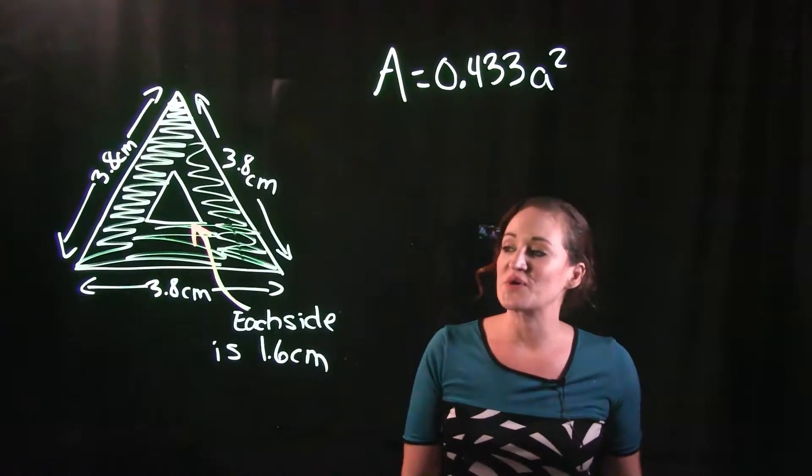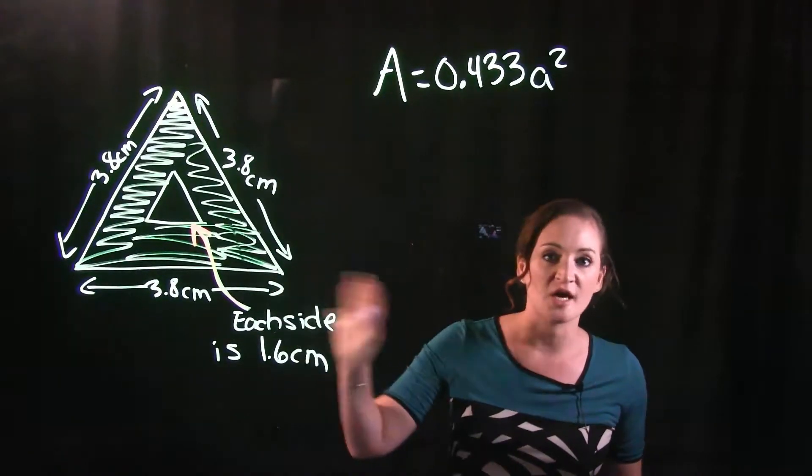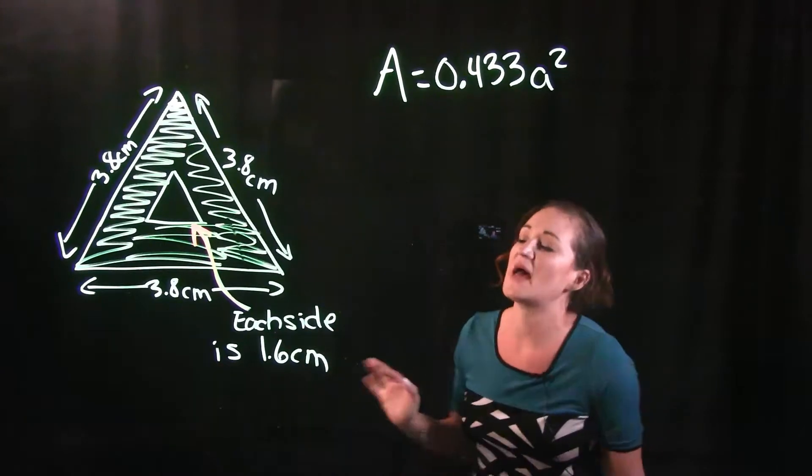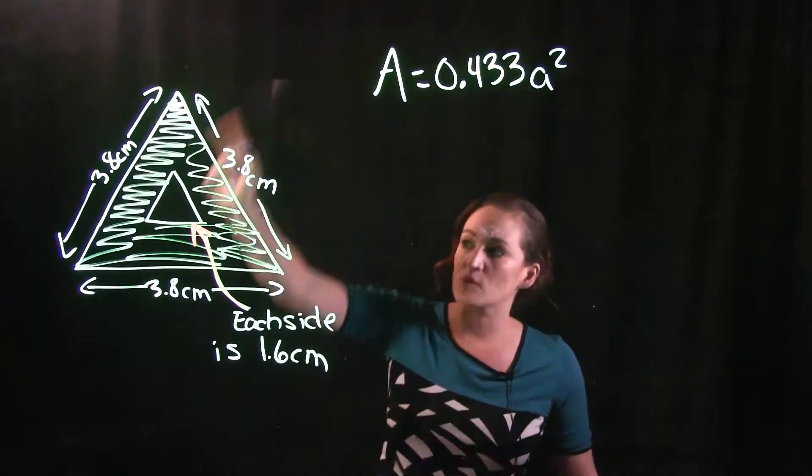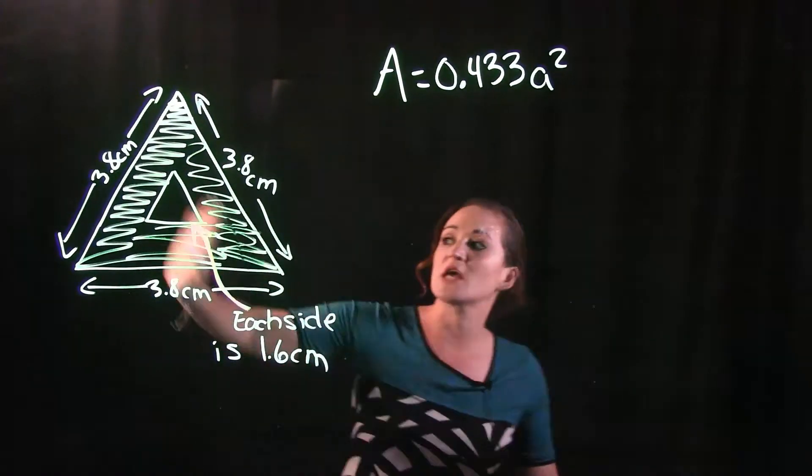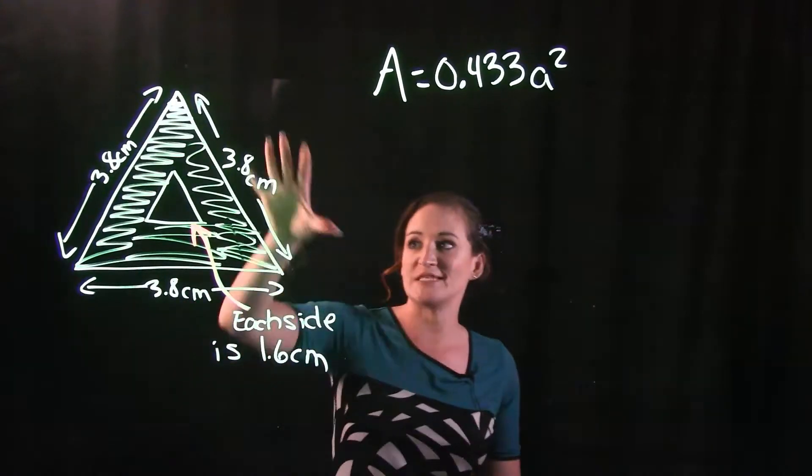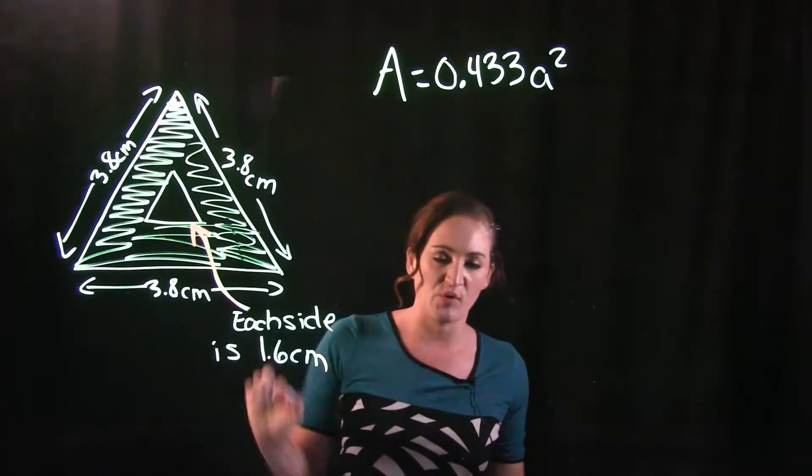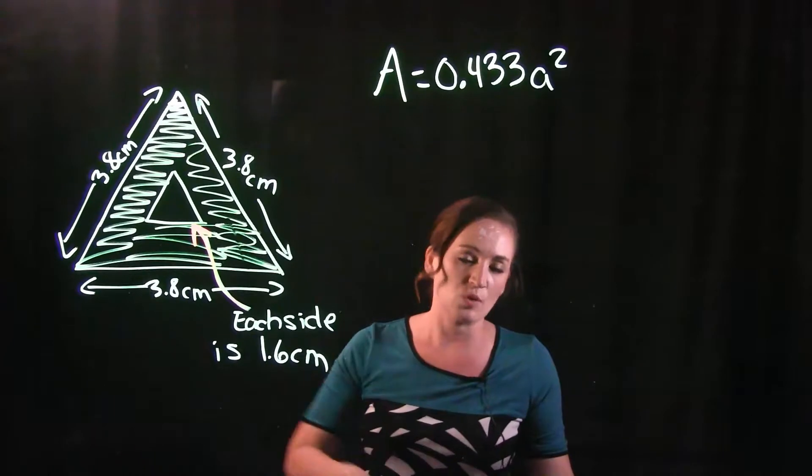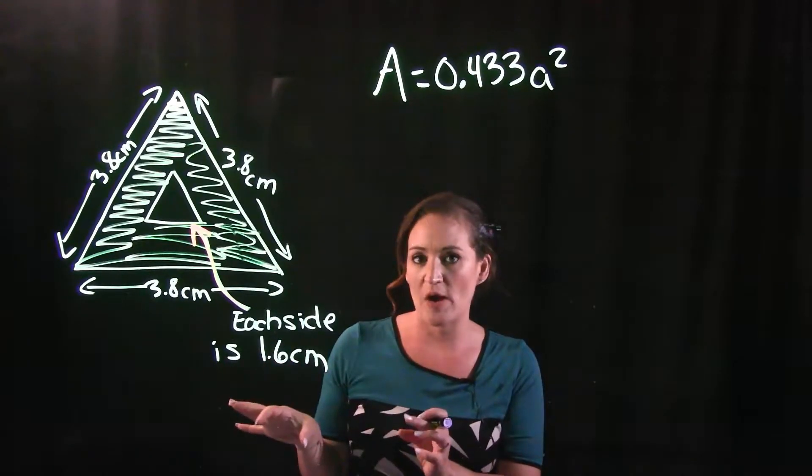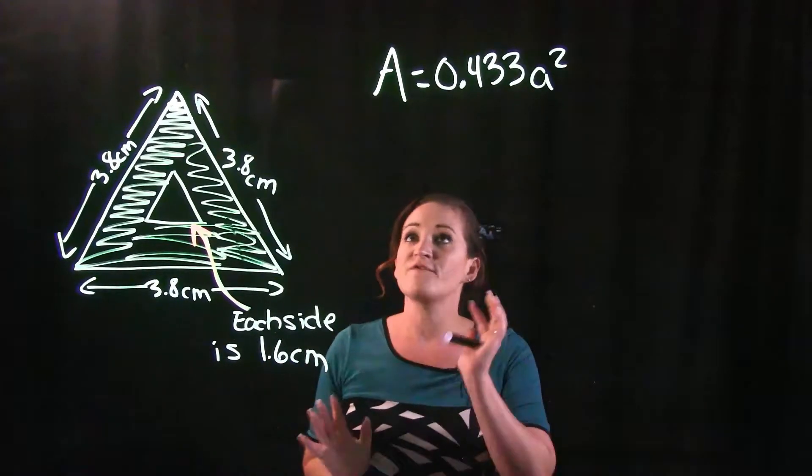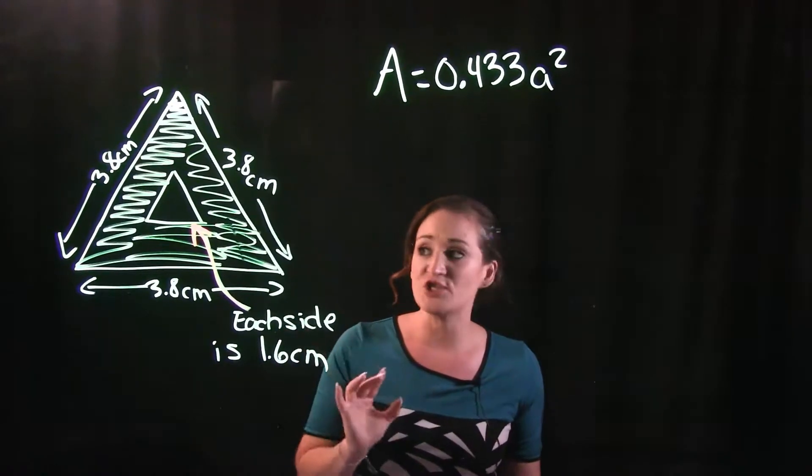All right, so this video is going to focus on how to find the area of the shaded region. What we have here is an equilateral triangle, and we know that because all sides are equal. We see 3.8, 3.8, 3.8, so all sides are equal. That means we have an equilateral triangle, and we want to find the area of the shaded region.